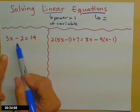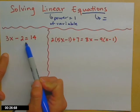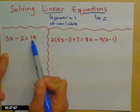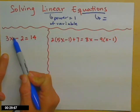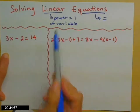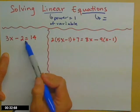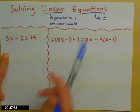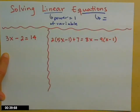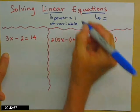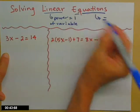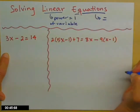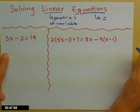If you look at the first example, 3x minus 2 equals 14. Here's my only letter — it's raised to the first power, so I have linear. I have an equal sign, that means I have an equation. Whenever you have an equation, your tool bag gets much larger than if you just have an expression, because you're allowed to do whatever you want as long as you do it to both sides.